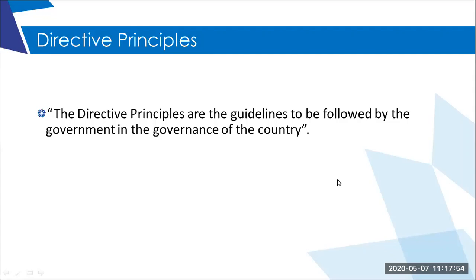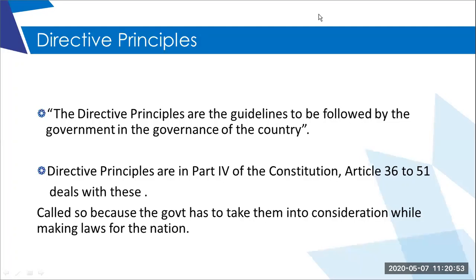Make a note of this definition: Directive Principles are the guidelines to be followed by the government. Also note that these Directive Principles are Part 4 of the Constitution of our country, and the Articles that come under them are Article 36 to 51. These Directive Principles can be found in Part 4 of our Constitution — basically, Articles 36 to 51 deal with these guidelines.